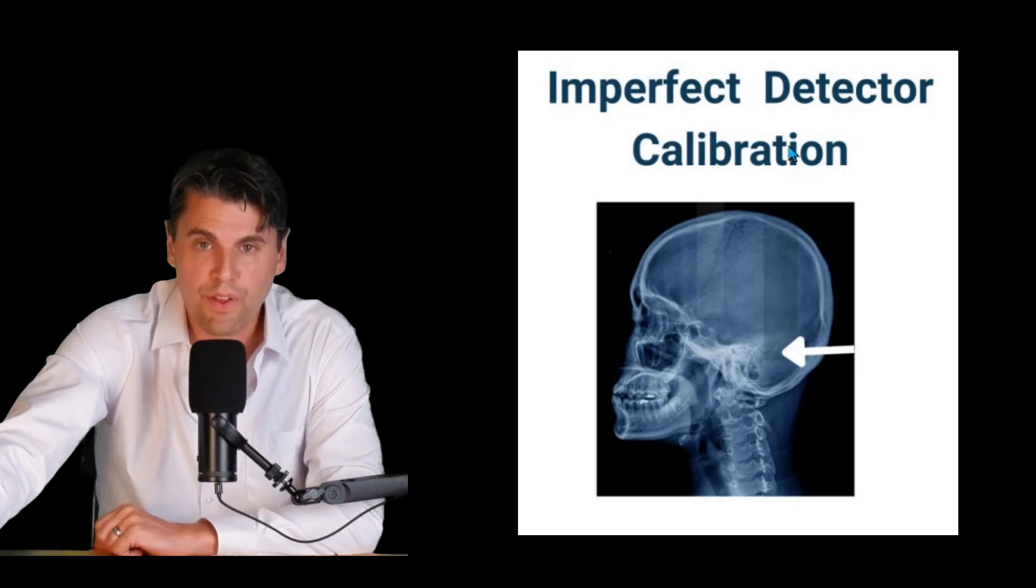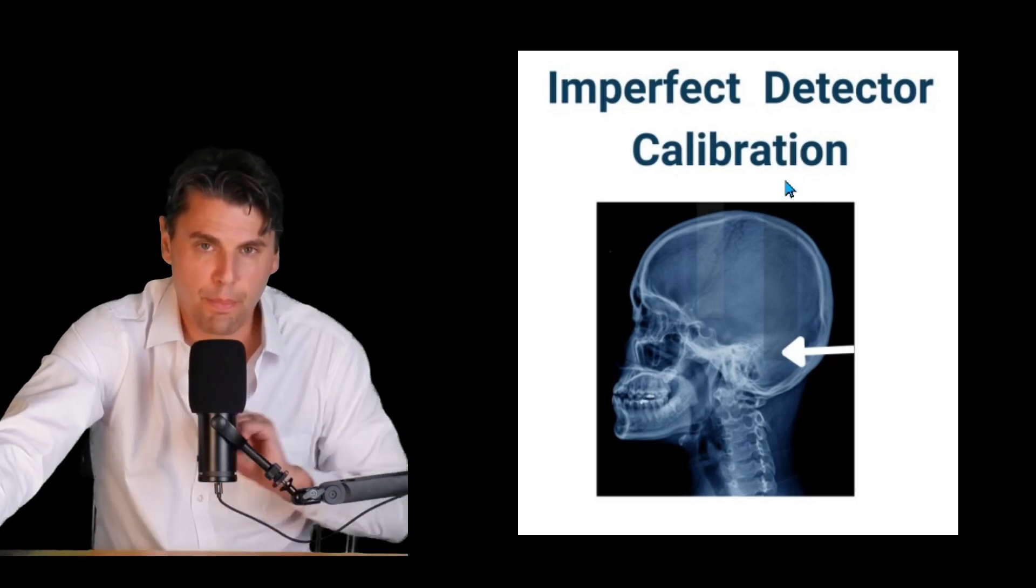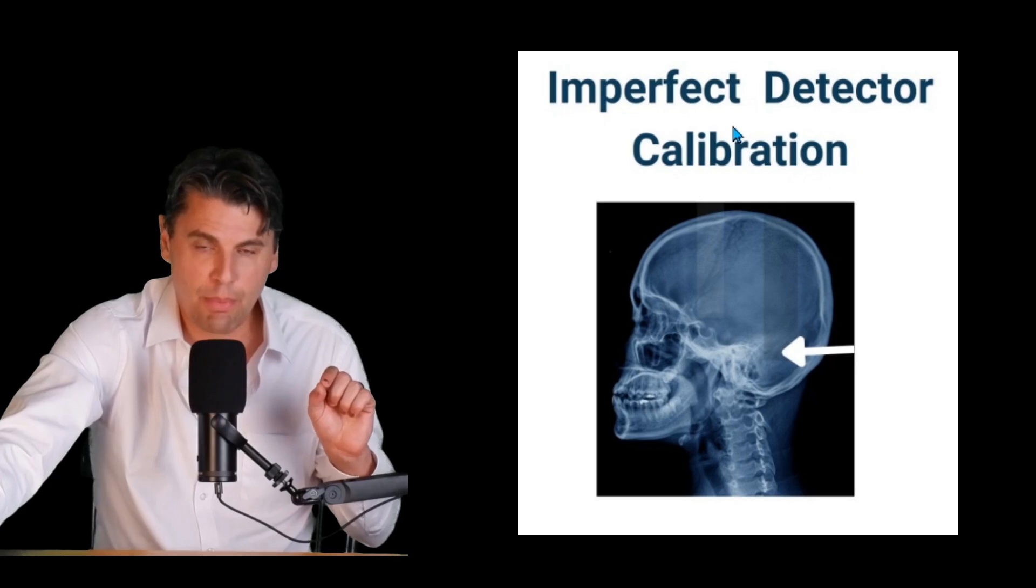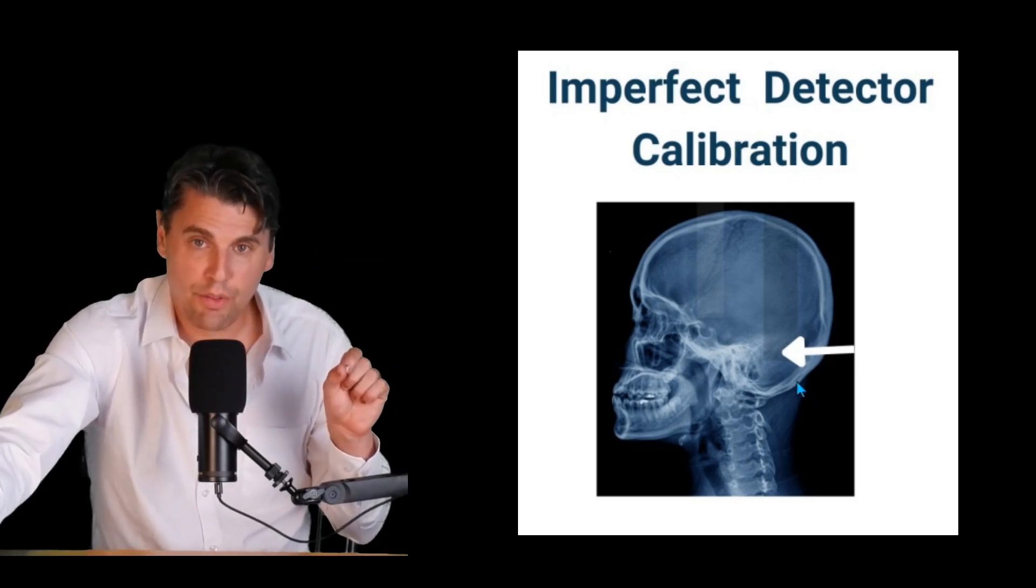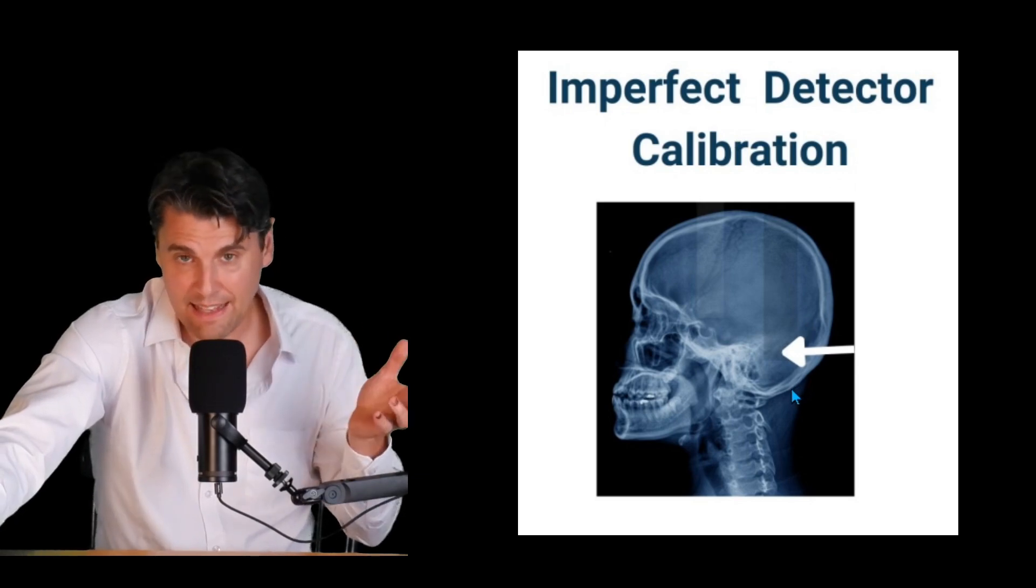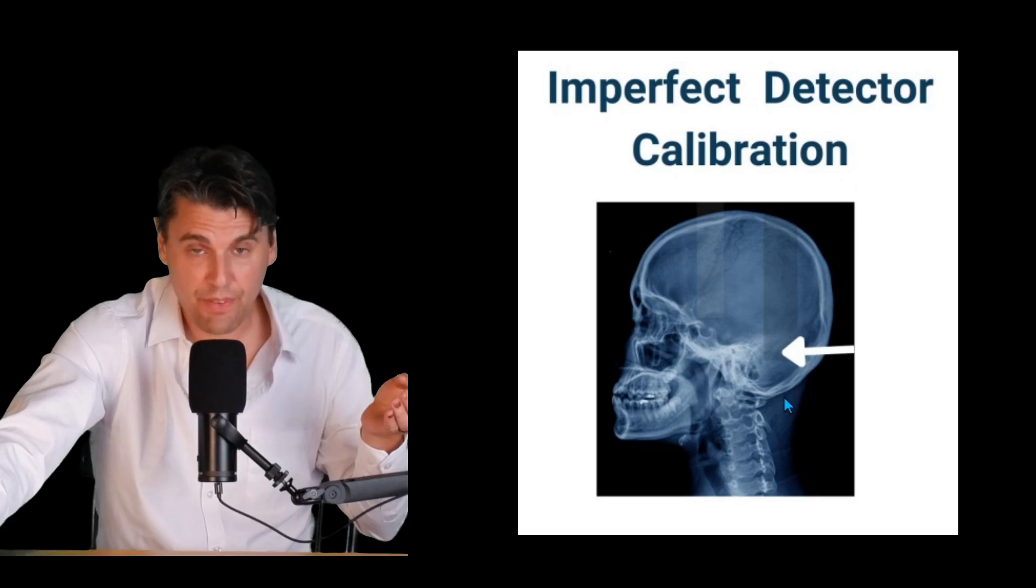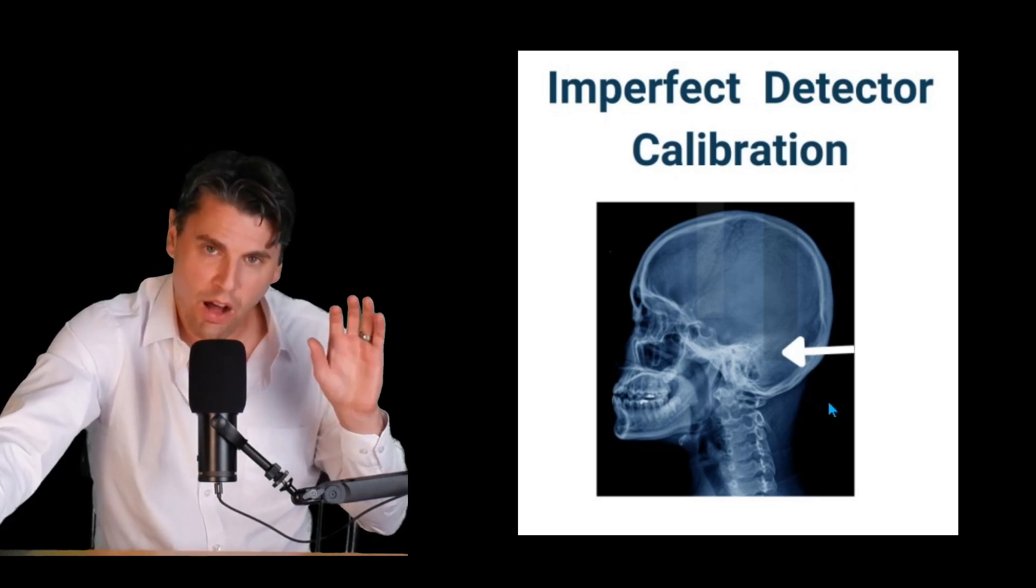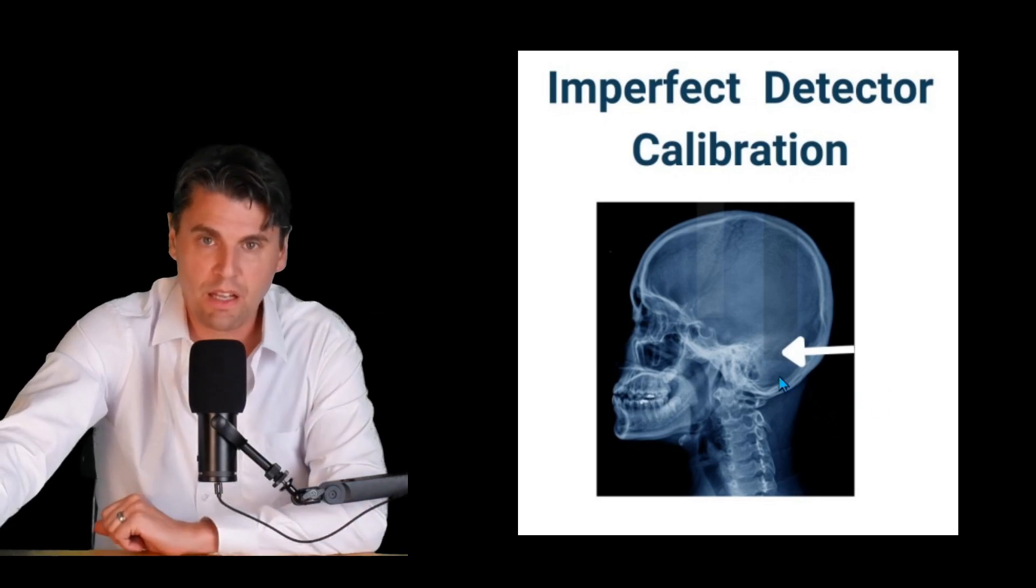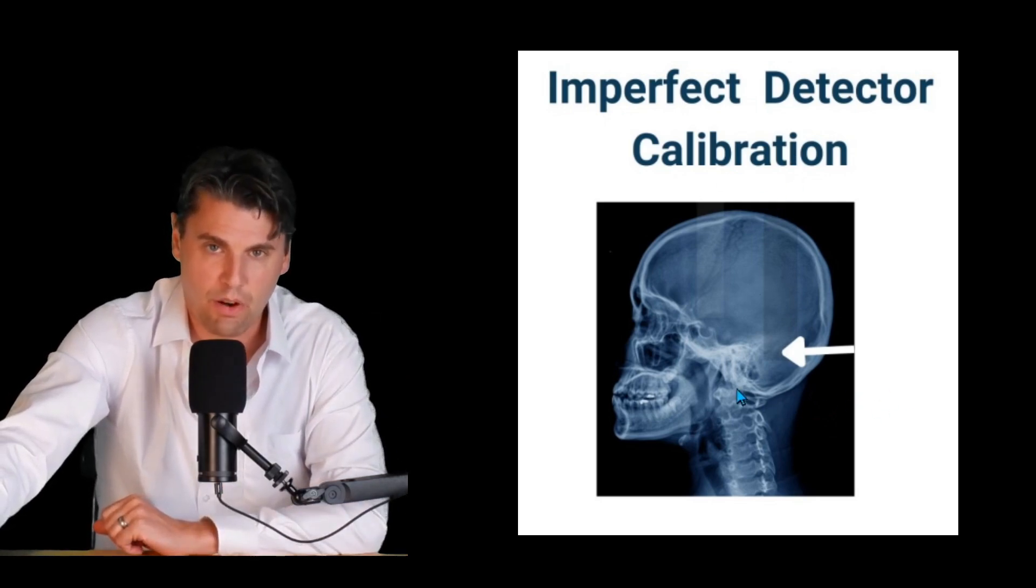It's also possible for there to be essentially strips that are a little bit different. They're showing up a strip in the image that's a little bit different because that part of the image is actually getting read out through one ASIC or one specific piece of electronics and if it is a little bit off in what we call the calibration it can look a little bit brighter or a little bit darker.